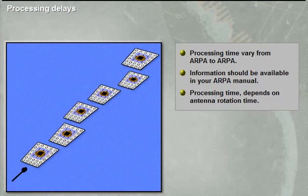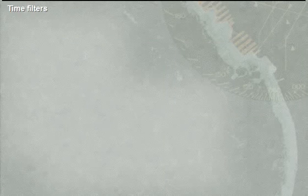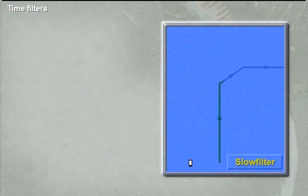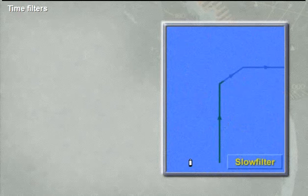Information about these limitations in your ARPA should be available in the ARPA manual. If not, contact the manufacturer and ask for it. The system uses a number of scans to calculate target information. This means a certain processing time — that is, from the time we press the manual acquisition button until the target information appears on the ARPA screen.